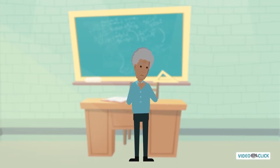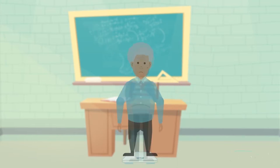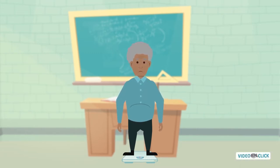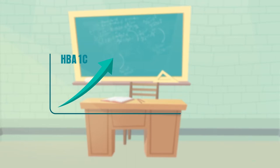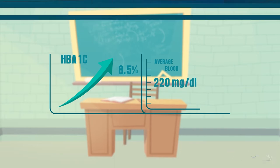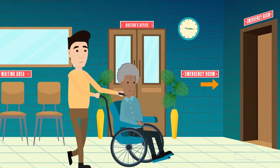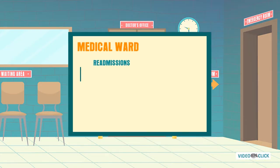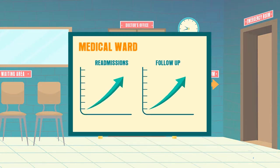Last year, John's diabetes became more symptomatic. Exercise has been less regular and he has gained a further 10 pounds in weight. HbA1C has risen to 8.5%, corresponding to overall average blood glucose of 220 milligrams per deciliter. This led to frequent visits to the emergency room, readmissions to the medical ward, and increased follow-up in the medical specialty clinic.